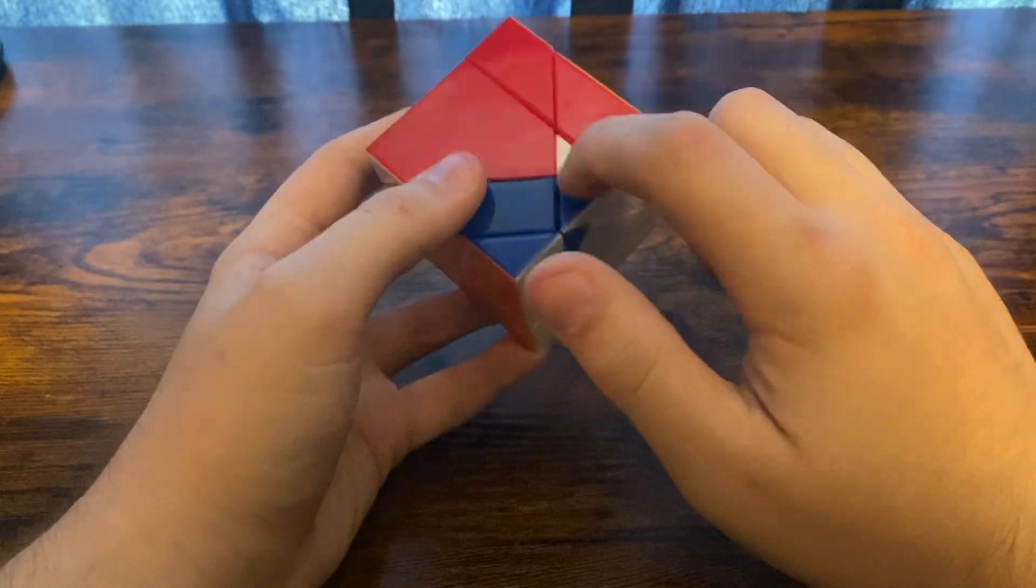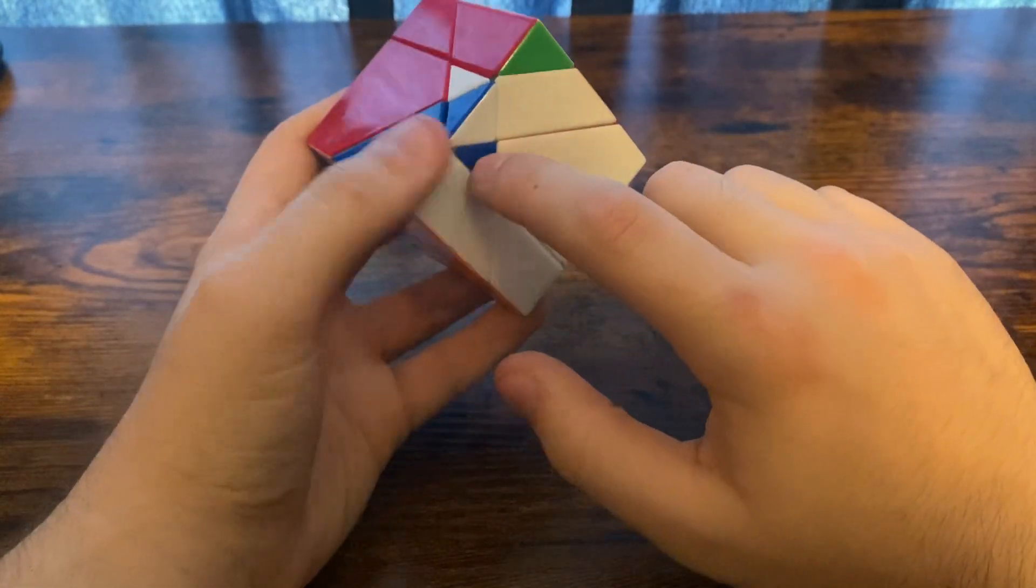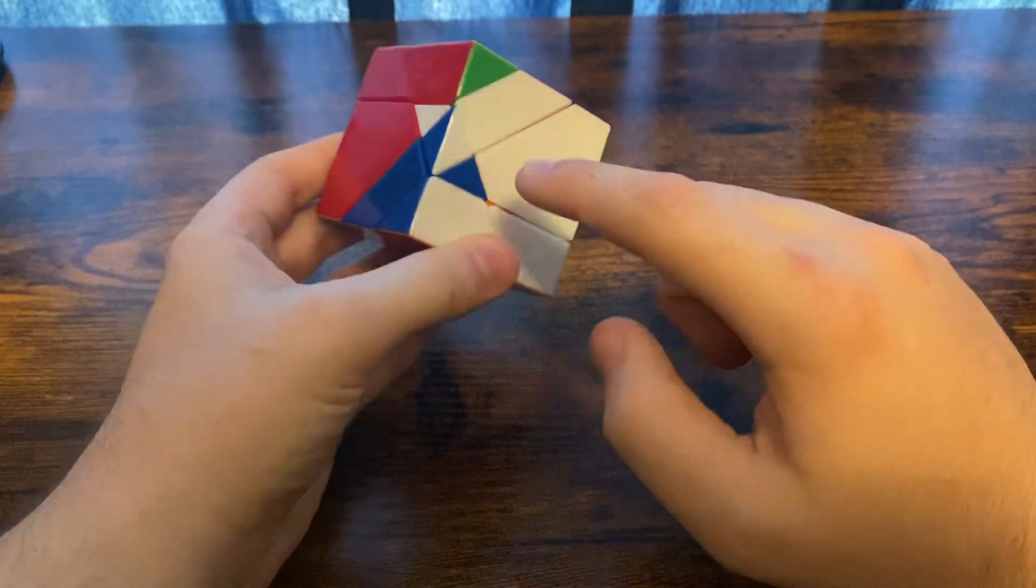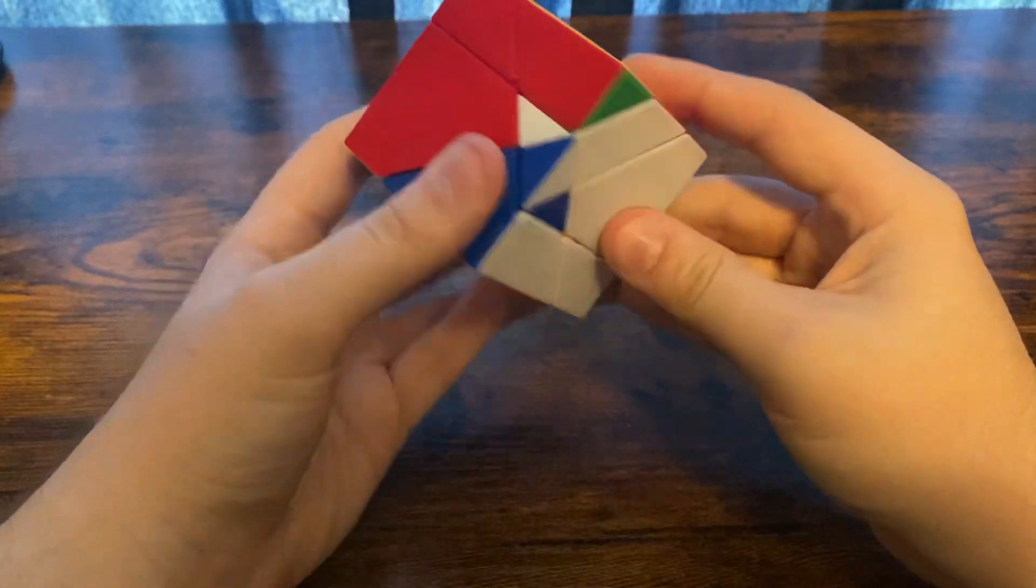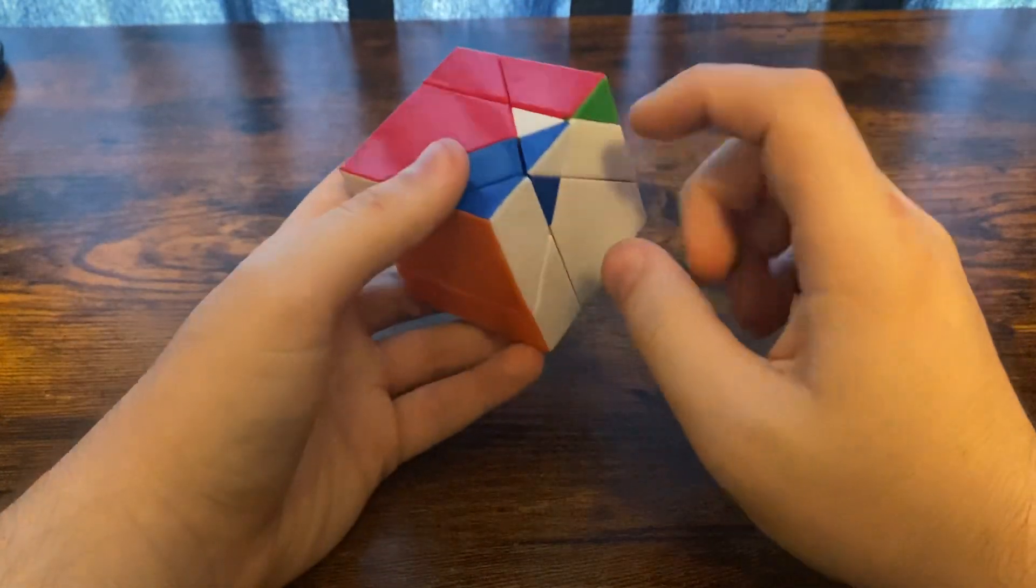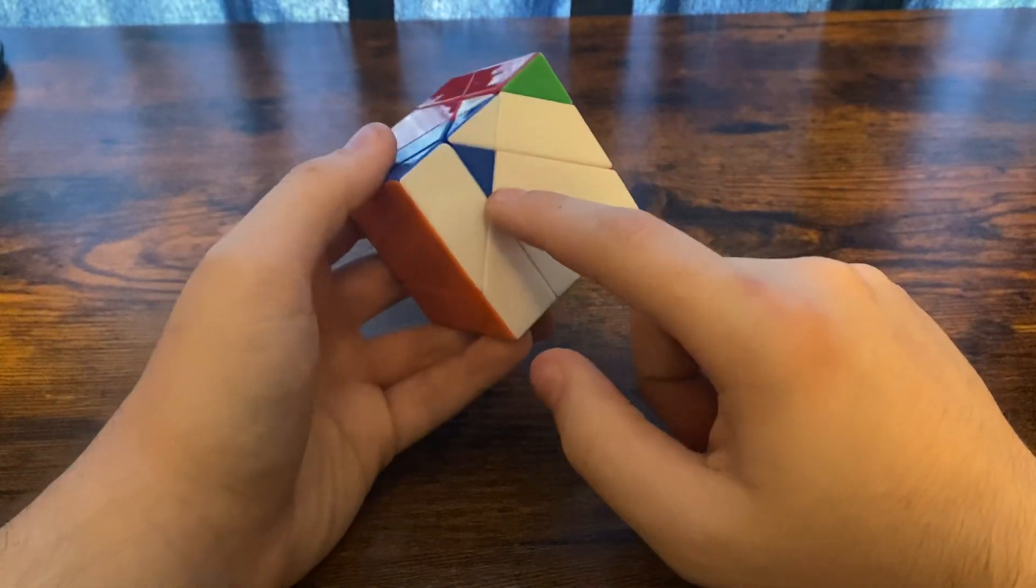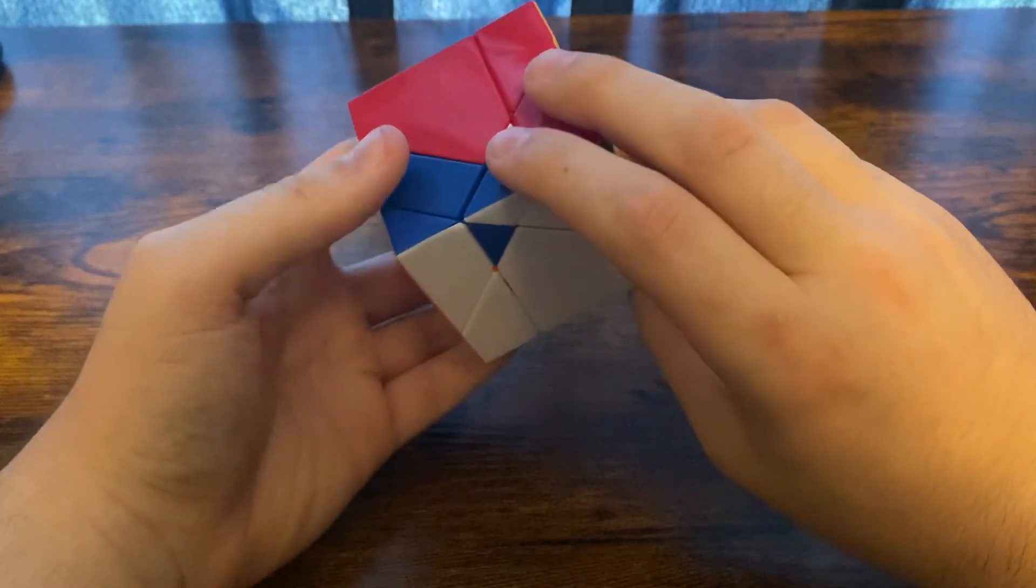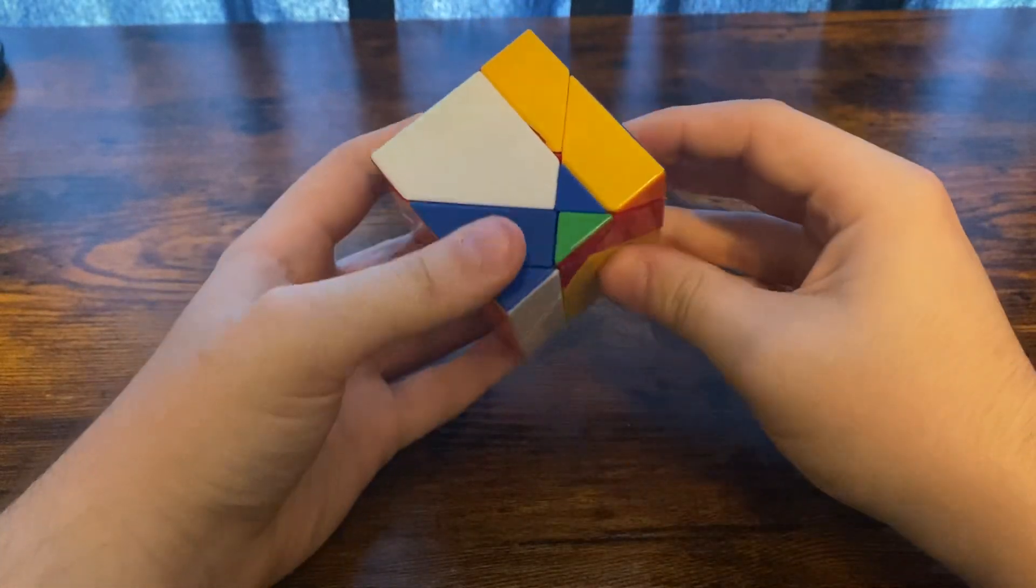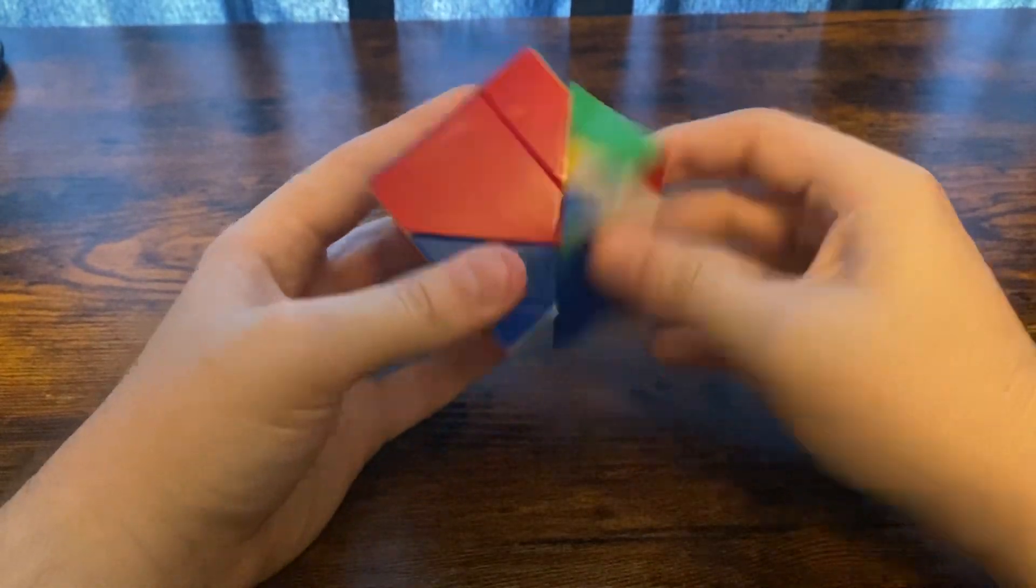We're actually going to do white. This piece is going to go here to the spot below it, this one is going to go here, and this one is going to go here. For that reason, you'll want to get the one that goes down here above it and then do the algorithm: R U R U' R.